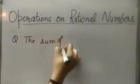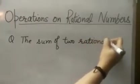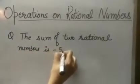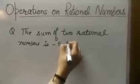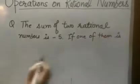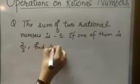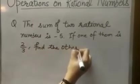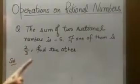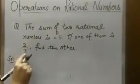The sum of two rational numbers is minus 5. If one of them is 2 by 3, find the other. Solution: What is given to us? Minus 5 is the sum of two rational numbers and the value of one rational number is known to us, and we have to find the other rational number.